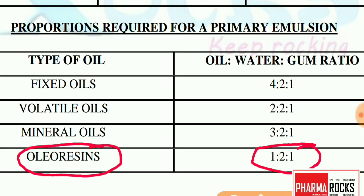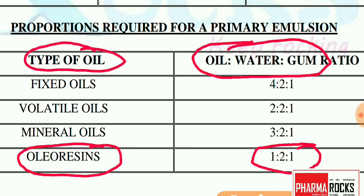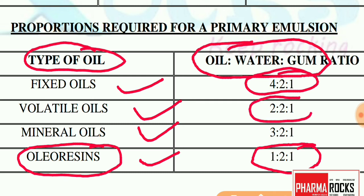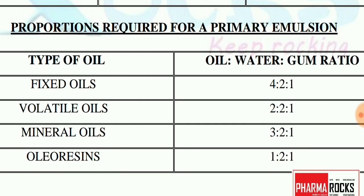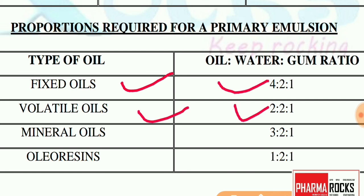This is very important for competitive exams: the oil:water:gum ratio and the type of oil. Fixed oil is 4:2:1, volatile oil is 2:2:1, mineral oil is 3:2:1, and oleoresins are 1:2:1. Remember: fixed oil is 4:2:1, volatile oil is 2:2:1, mineral oil is 3:2:1, and oleoresins is 1:2:1.